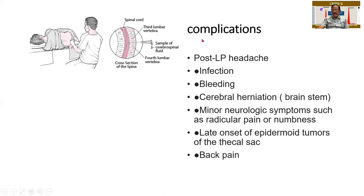There can be complications because of CSF collection. One complication is infection — just like bone marrow, it is done under very sterile aseptic precautions. Bleeding can be present. Cerebral herniation — the amount of fluid you take must be limited; otherwise the medulla oblongata can come into the foramen magnum and cause an obstruction. There can be minor neurological problems. Back pain is a very common complication. Please remember the three important ones: infection, bleeding, and cerebral herniation.